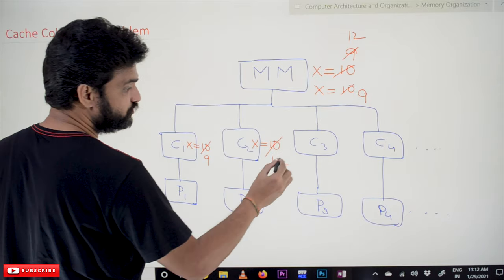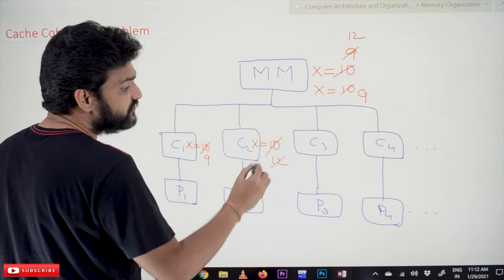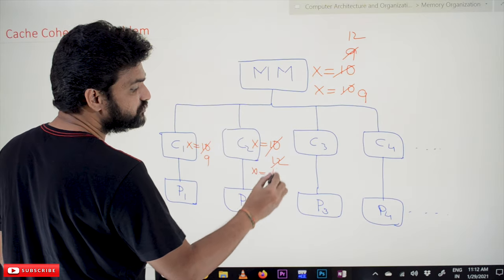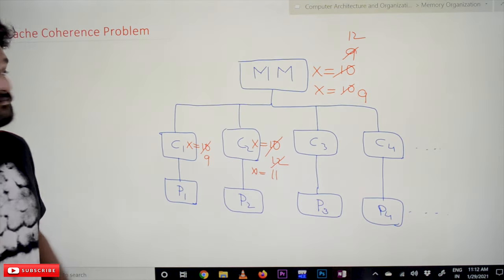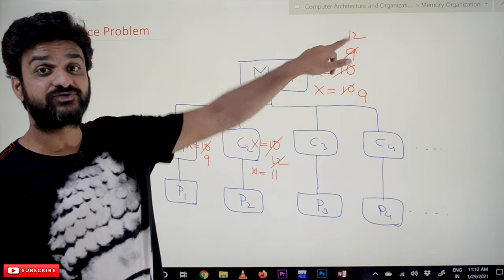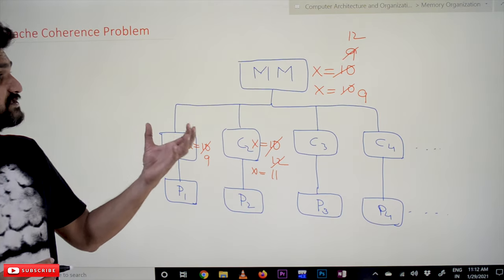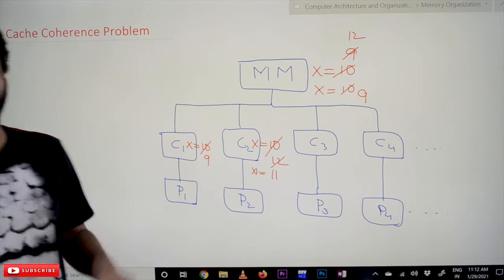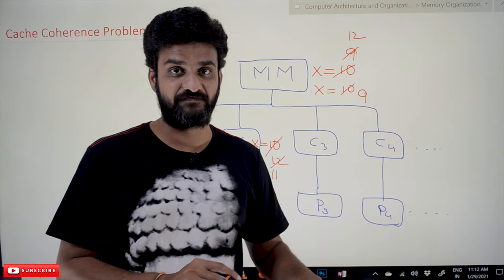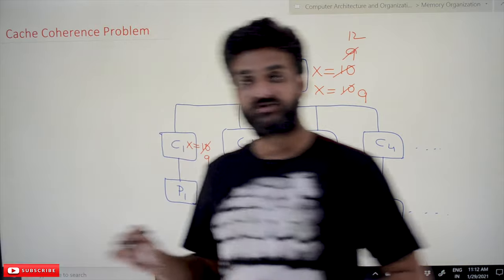Actually, what the value of X should be? X should be 11. But what we got is 12. So this is what we call inconsistencies, and this problem is what we call the cache coherence problem.